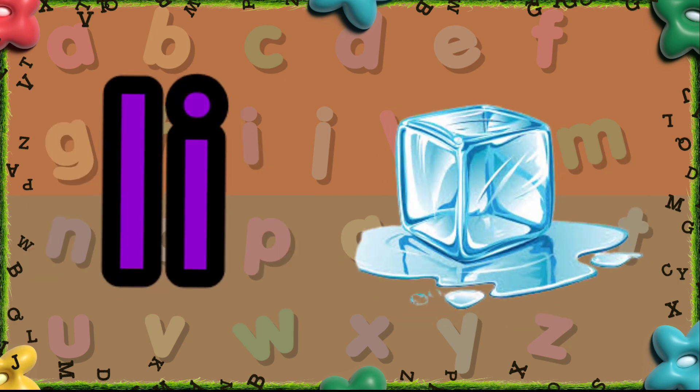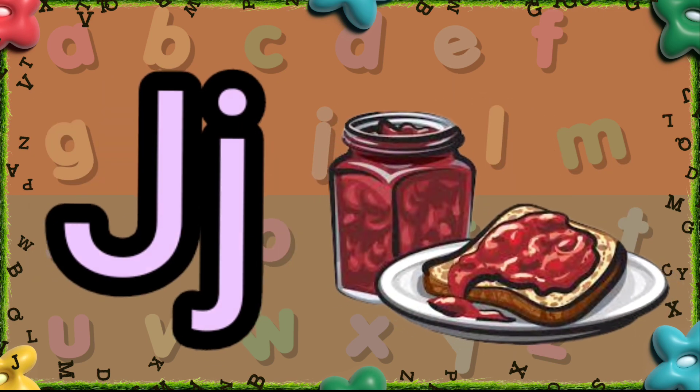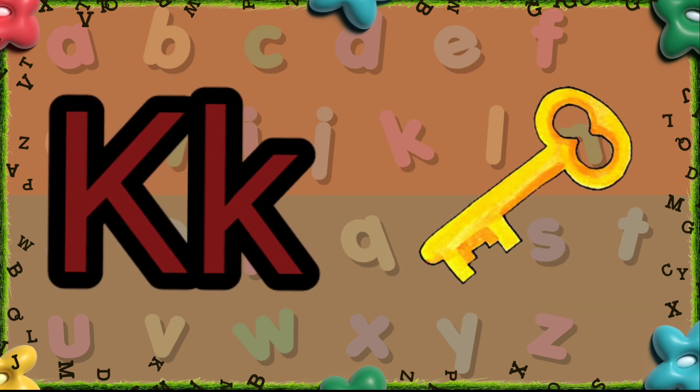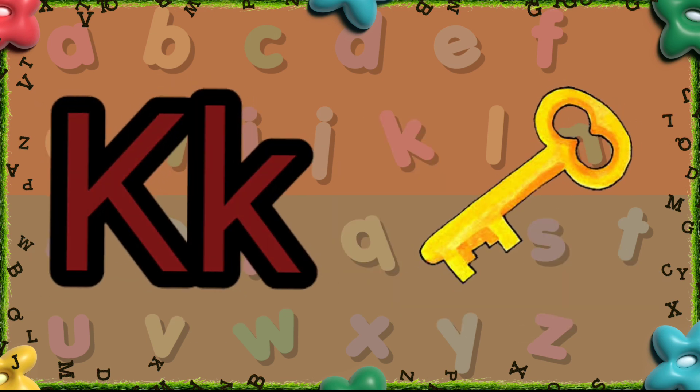I is for Ice Cube. J is for Jam. K is for Keys.